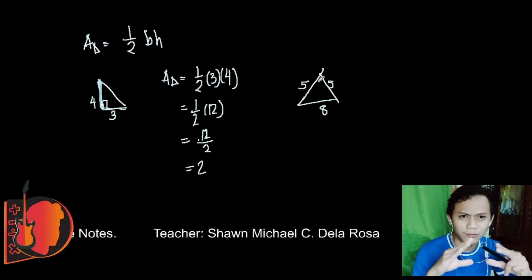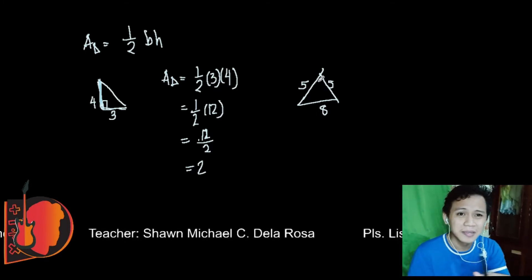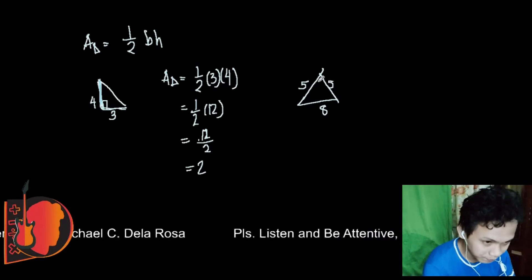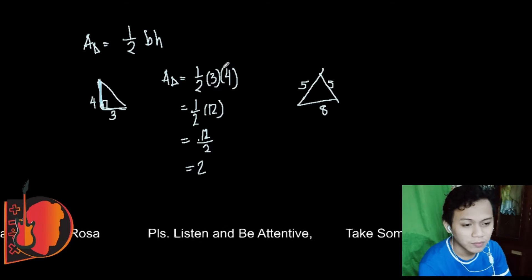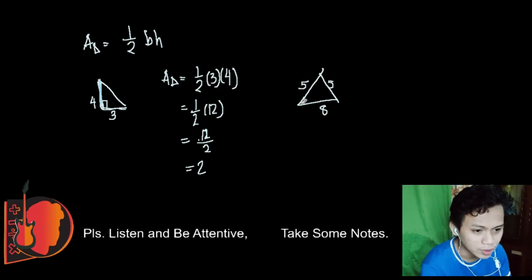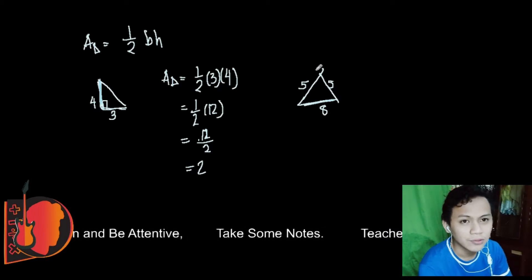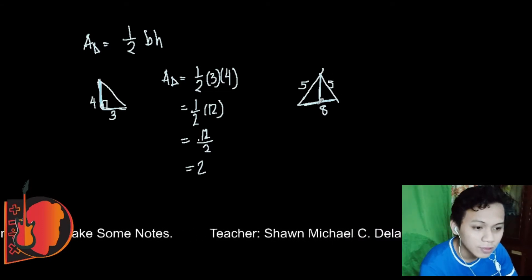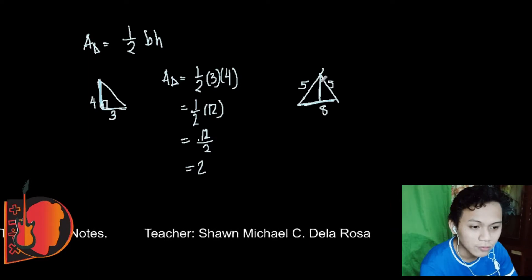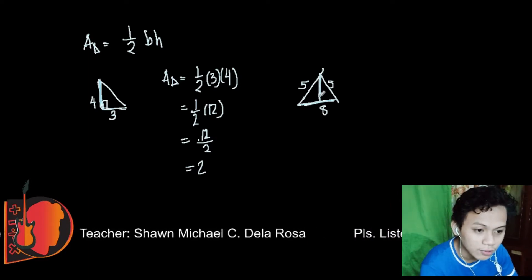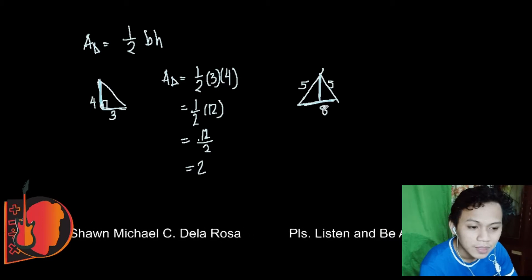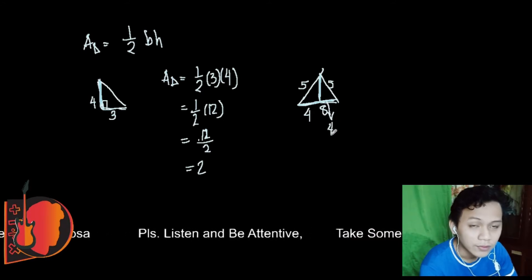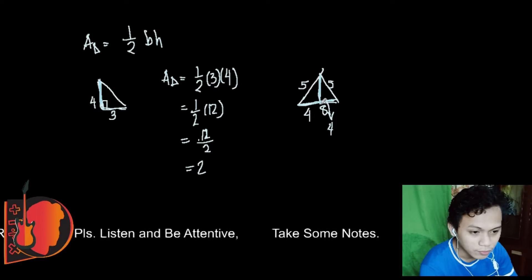A triangle always has 3 sides. For an isosceles triangle, two sides are equal. We have the base which is 8, but we don't have the height. To find the height, since the two sides are both 5, we draw an angle bisector from the apex to the midpoint of the base, dividing it into two equal halves of 4 and 4.